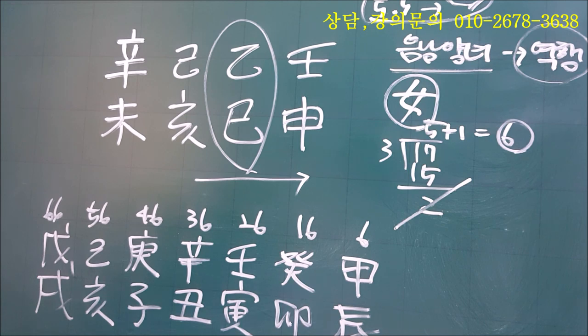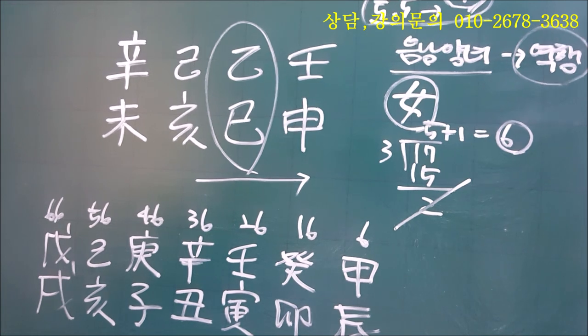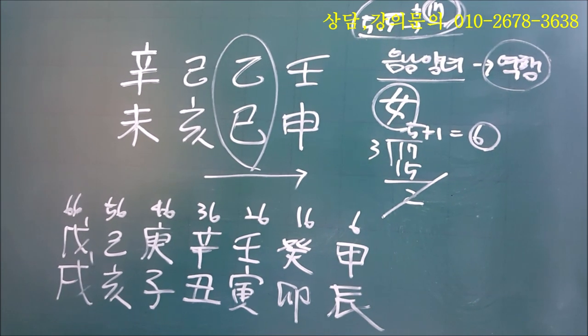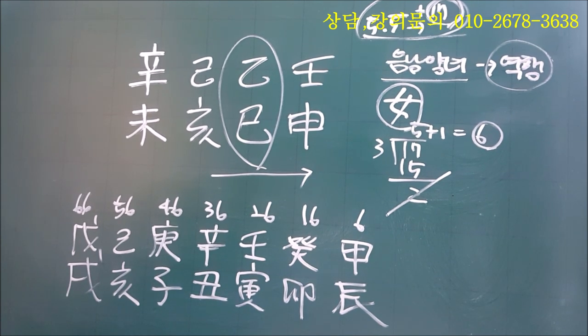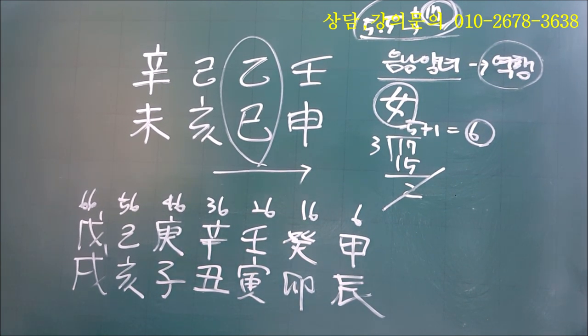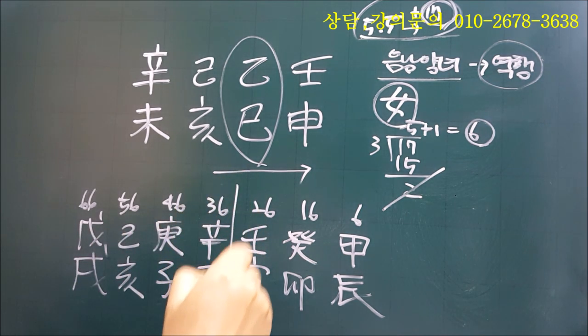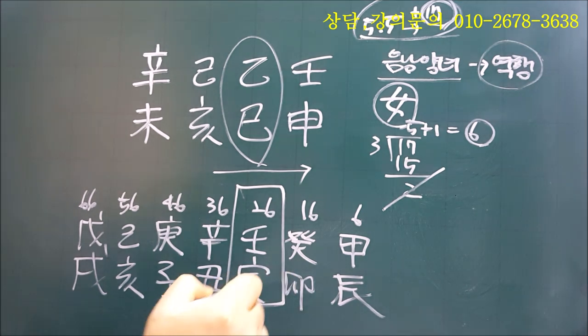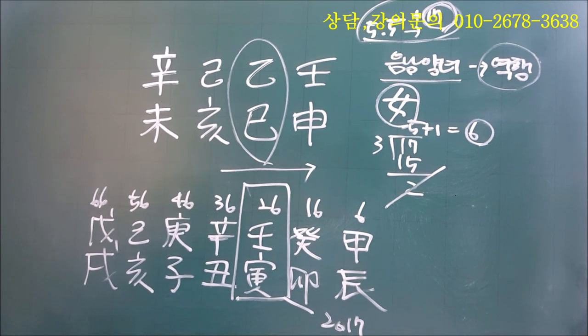칠판이 조금 좁죠? 제가 핸드폰을 조금 뒤로 멀리 조금 둘게요. 이러면 화면이 다 들어갑니다. 자, 그리고 이분은요. 아직 나이가 그렇게 많은 분은 아니세요. 대운이 이렇게 지금 보시면 세 번째 대운인 이민대운에 들어와 있고요. 이 대운은 2017년부터 시작이 됐어요. 2017년이 정유년이었거든요.